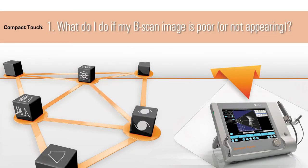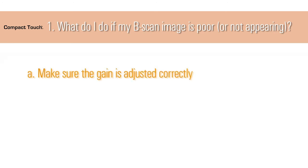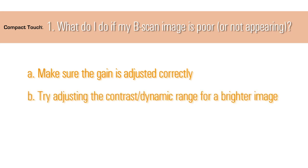1. What do I do if my B-scan image is poor or not appearing? Make sure the gain is adjusted correctly, depending on the area of exam. If the gain is properly set, try adjusting the contrast dynamic range for a brighter image. If neither of these works, call a Quantel technician.